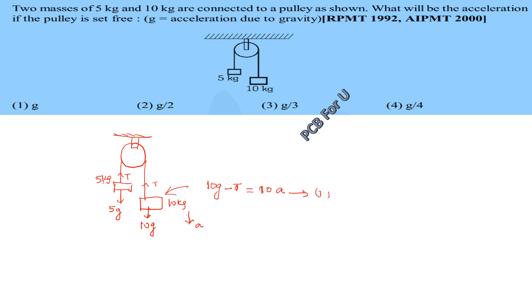Similarly, here we have 5g. T minus 5g, we have tension minus 5g. Here it will be upward. T minus 5g equal to 5a. We have this equation.